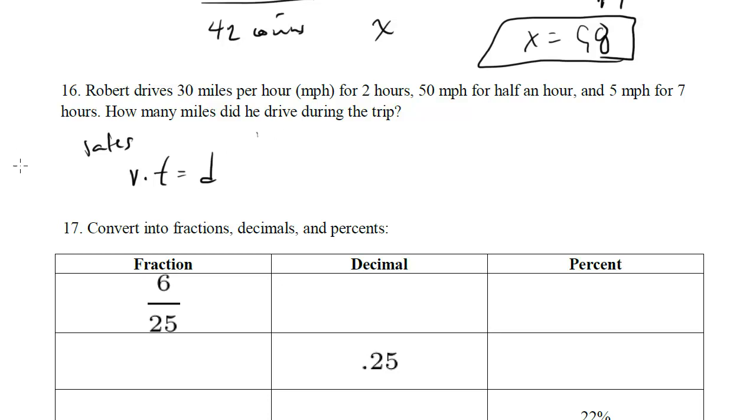The main formula to remember for rates is velocity times time equals distance. You can also do velocity equals distance over time, which is this one rearranged, but we'll use this because we want to find the total distance.